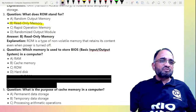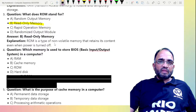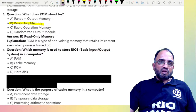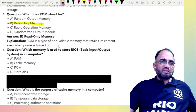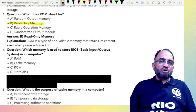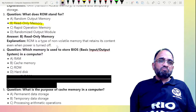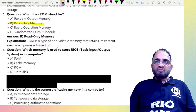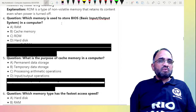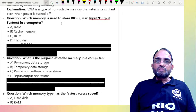ROM retains its contents when power is turned off. It stores the BIOS — Basic Input Output System — which is stored by the manufacturer. If you need to edit or modify it, that is not possible in standard ROM. For that, you have to go for EPROM or EEPROM — the different versions of ROM.